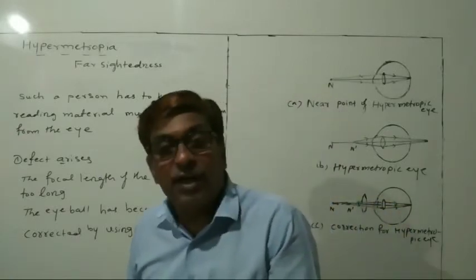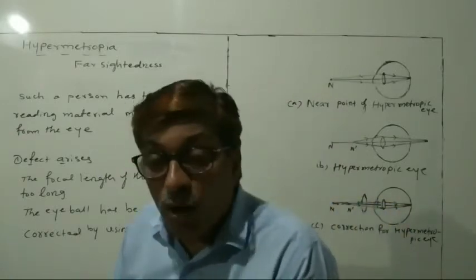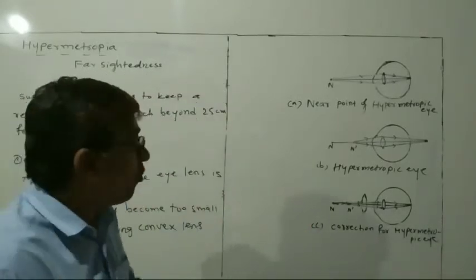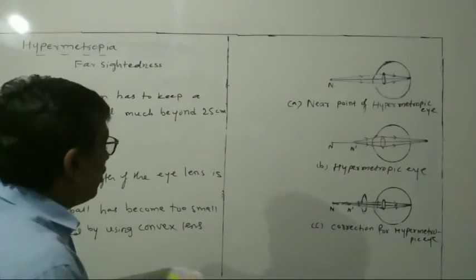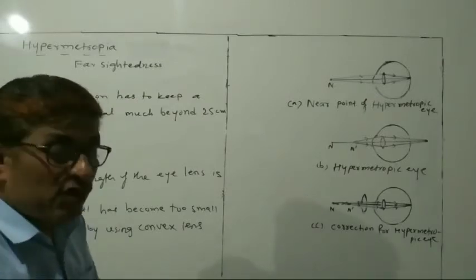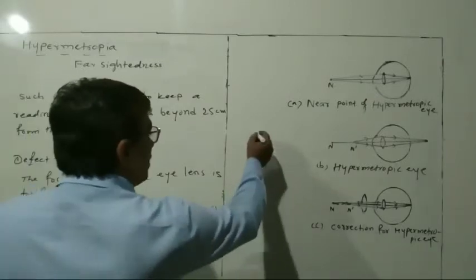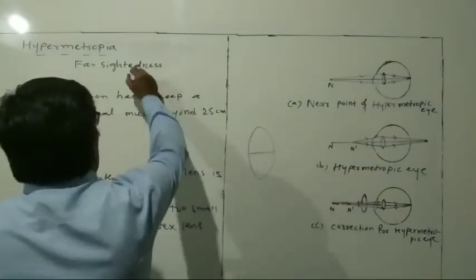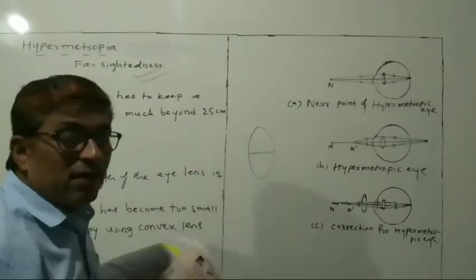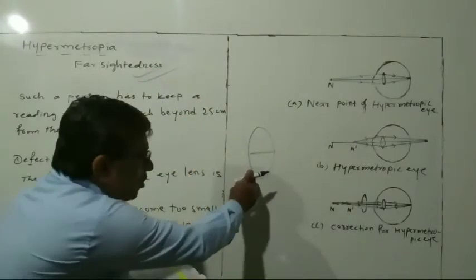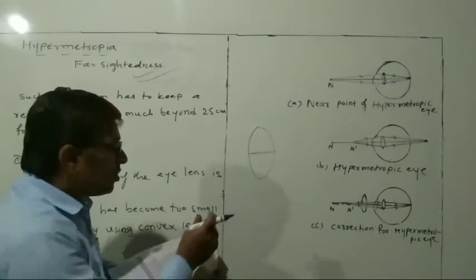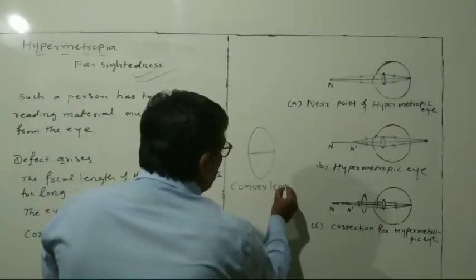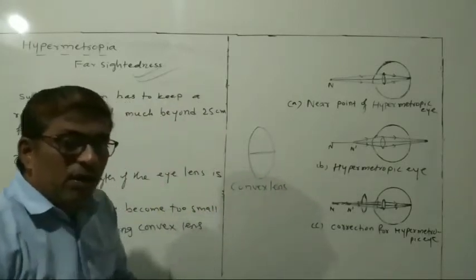This effect can be corrected by using a convex lens. So by using the convex lens — convex lens — the defect can be corrected. Let us now see the diagram.